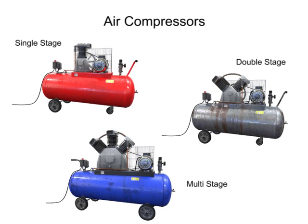If pressures of more than about 175 psi are needed, multi-stage compressors should be used. On these larger compressors, cooling may take place by circulating water instead of air. To reach a pressure of 2500 psi, as many as 6 or 7 stages may be needed with cooling between each stage. Their versatility makes compressors one of the primary components in air production.